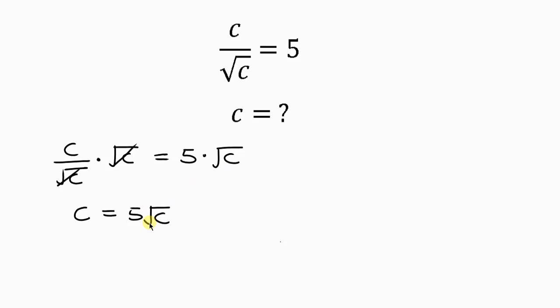Now to get rid of this square root, I have to take the square of both sides. So I'll take the square of the left. I'll also take the square of the right-hand side.